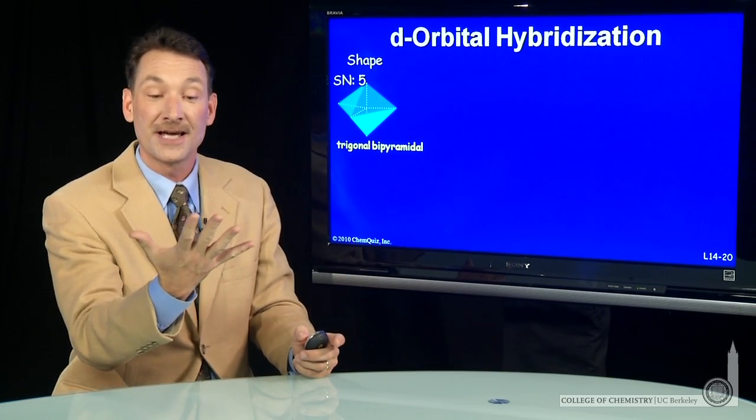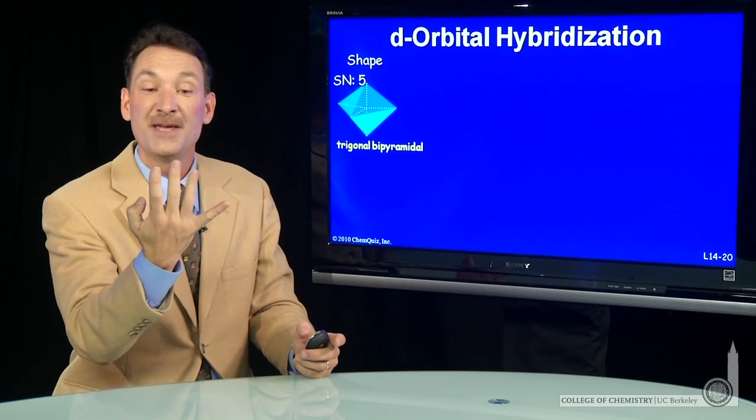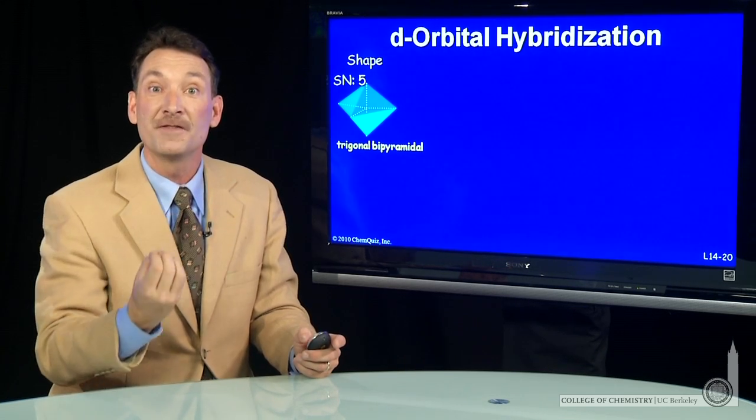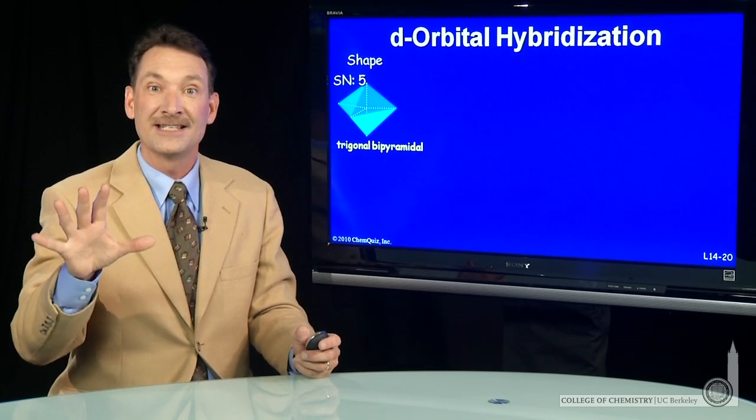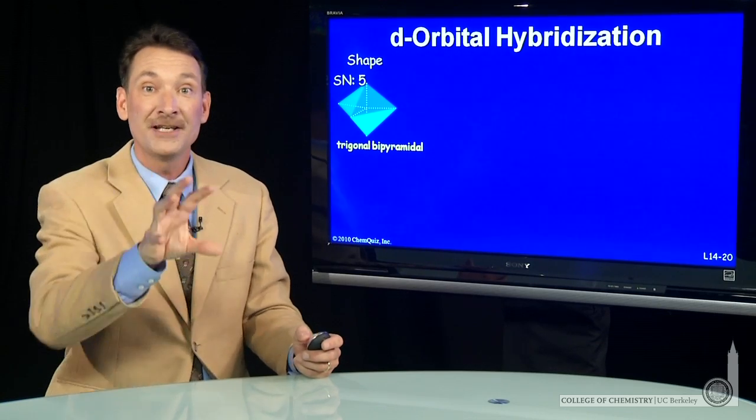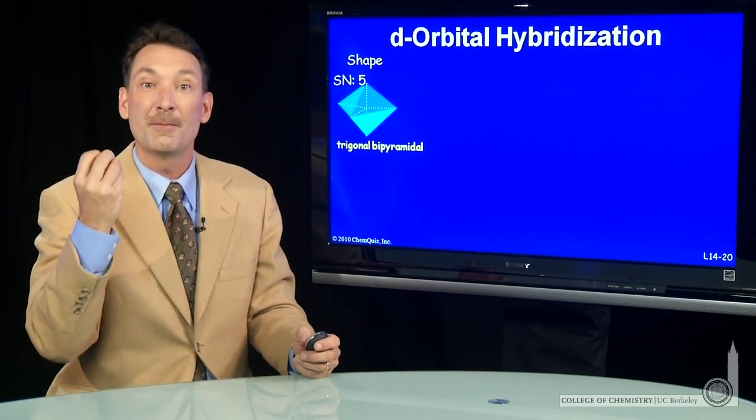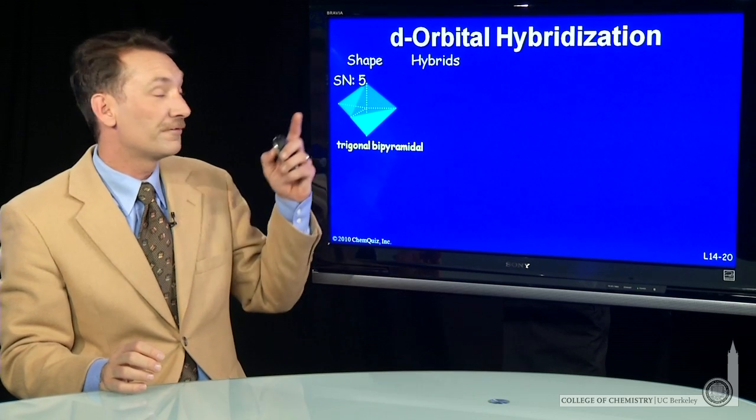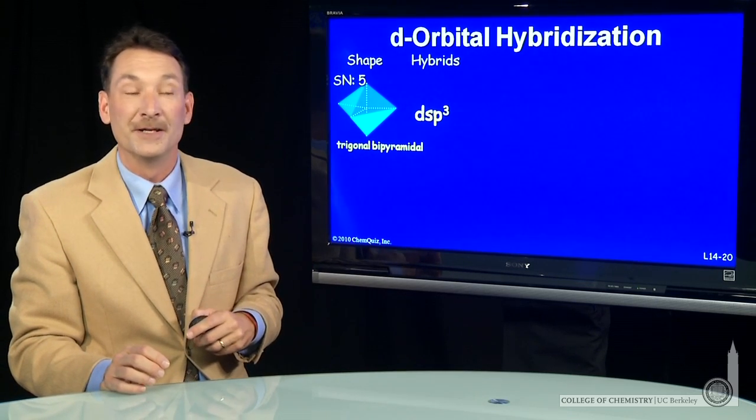So I hybridize together an s, the three p's, that's four, and one of the d orbitals. And I can take those and make five linear combinations and come up with five equivalent orbitals that point toward the vertices of the trigonal bipyramid.